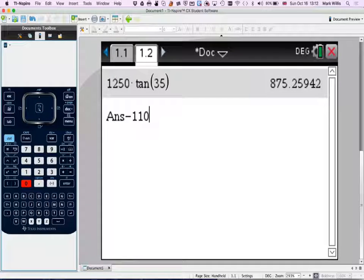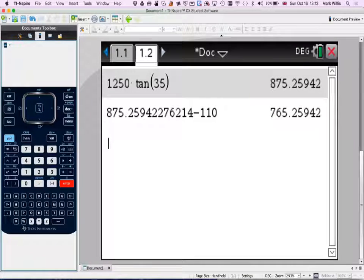That just takes the previous answer. The answer is represented by 875, and that gives 765.25.